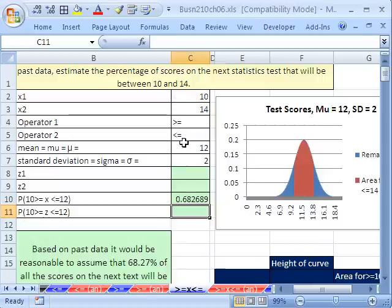Because how many standard deviations is 10 below? Minus 1. How many standard deviations is 14 above? Exactly 1. So we could have just gone to our normal rule.